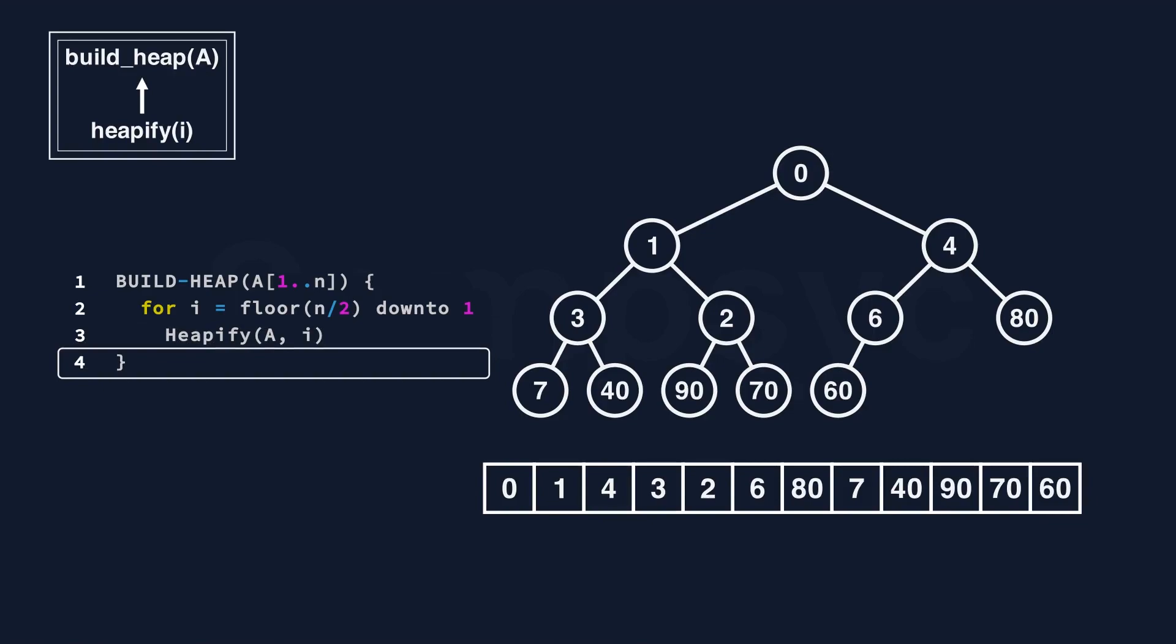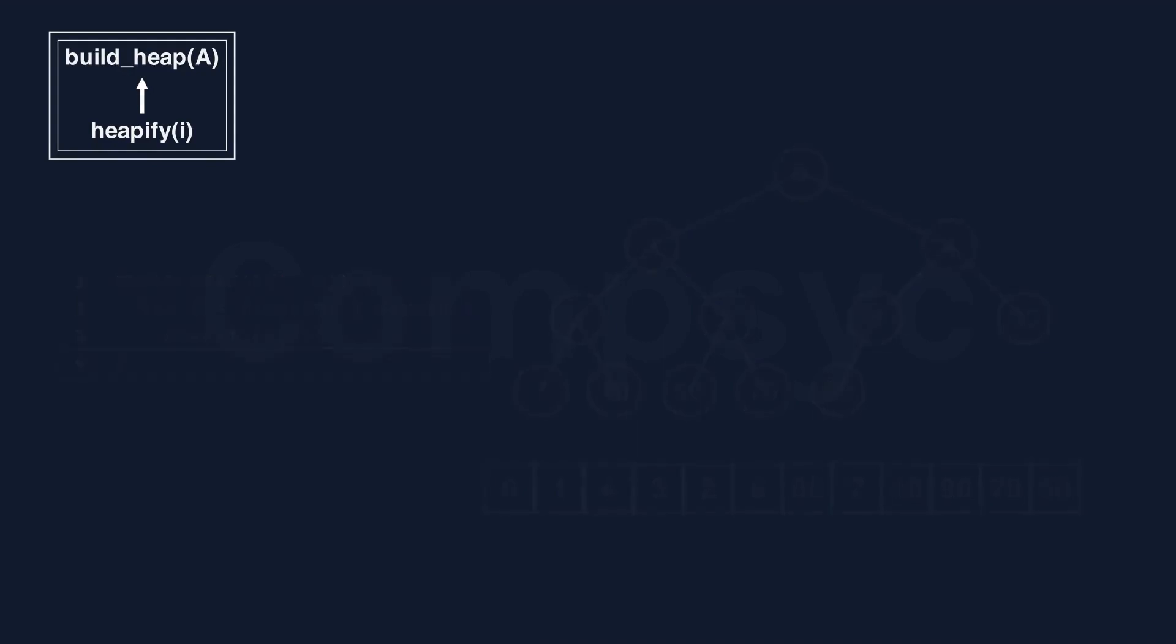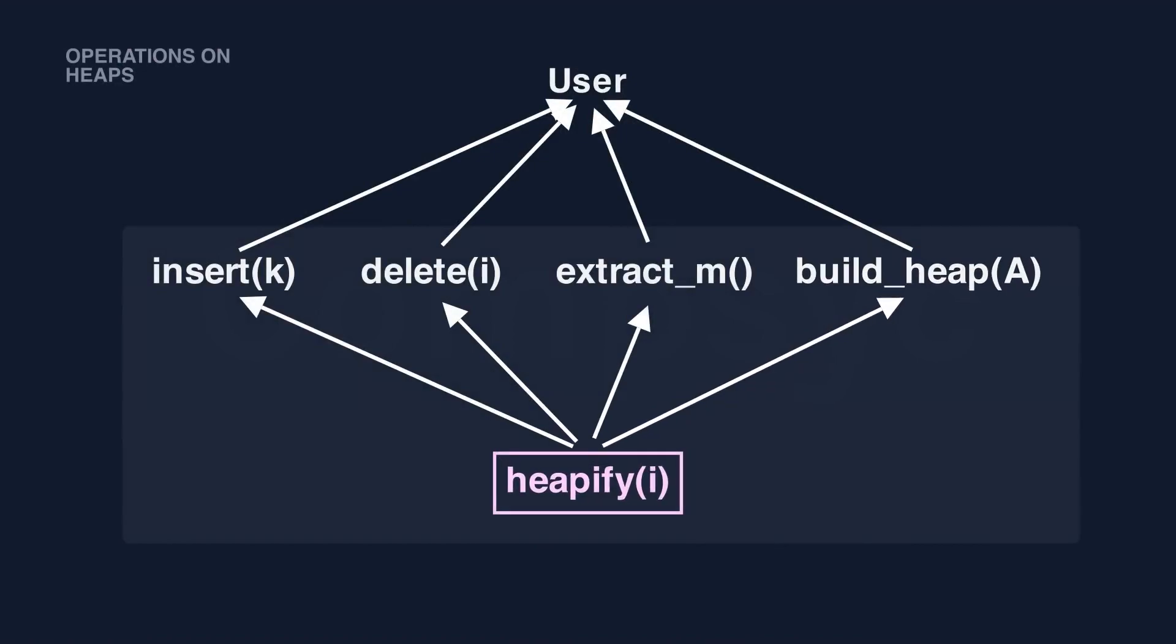All you need to know at this point is that build heap is a larger operation than heapify. This is how heapify function is used by build heap. In the language of computer science, heapify is a helper function. Awesome! Today we talk about a few operations on heaps that are commonly used. Operations like insert, delete, extract m, build heap maintains a heap and operates on heap level. Well, heapify maintains a node and operates on node level. Hope the previous example helps you understand it. Okay, this is all I have. See you later!